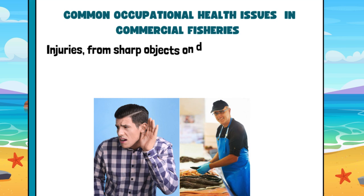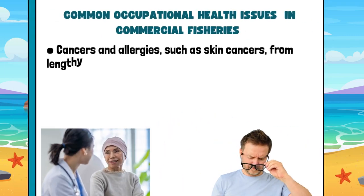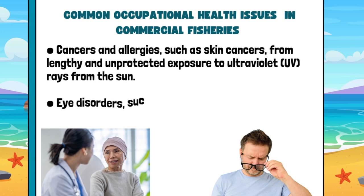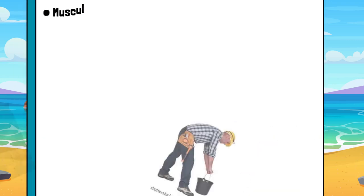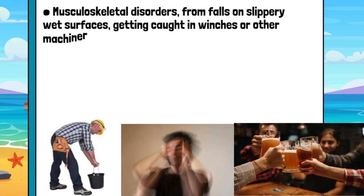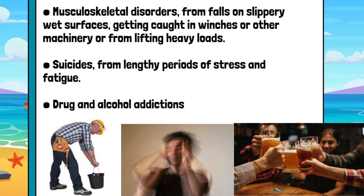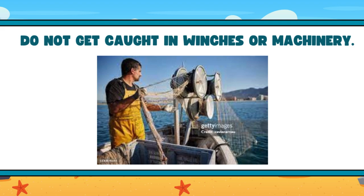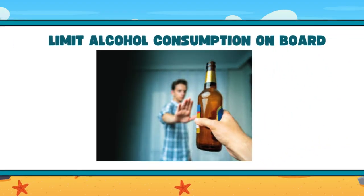Common occupational health issues in commercial fisheries: injuries from sharp objects on deck, gears, or fish handling; hearing disorders from working in noisy engine rooms; cancers and allergies, such as skin cancers, from lengthy and unprotected exposure to UV rays from the sun; musculoskeletal disorders from falls on slippery wet surfaces, getting caught in winches or other machinery, or from lifting heavy loads; suicides from lengthy periods of stress and fatigue; drug and alcohol addictions. Safety reminders: do not get caught in winches or machinery; wear gloves when handling catch; limit alcohol consumption on board; be careful with deck openings and hatches; wear protective clothing.